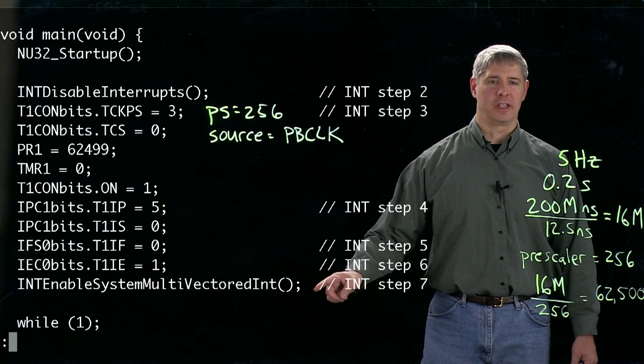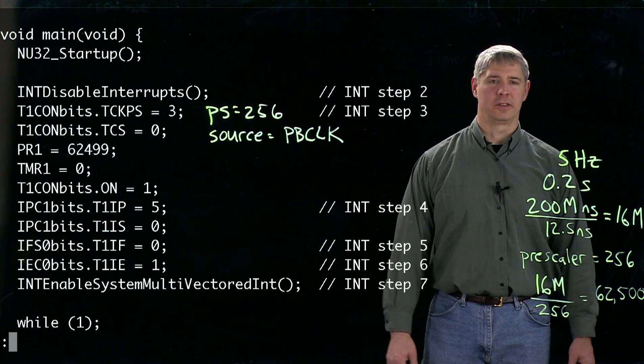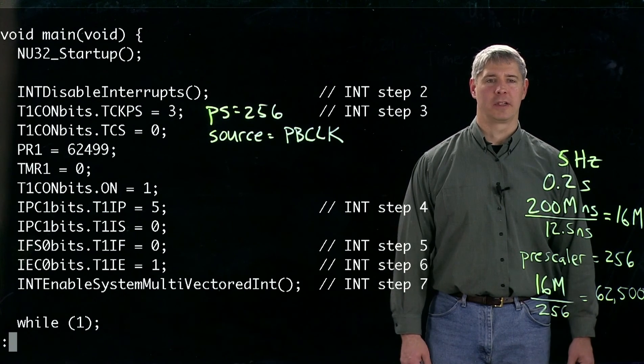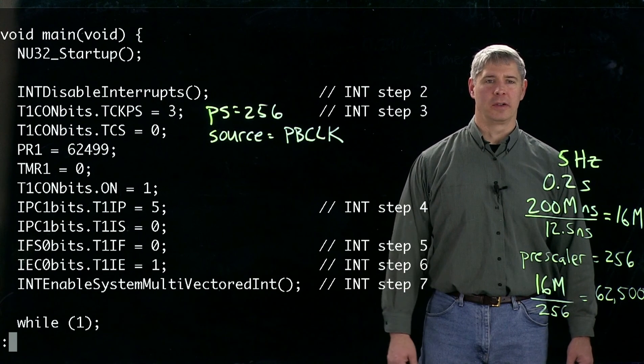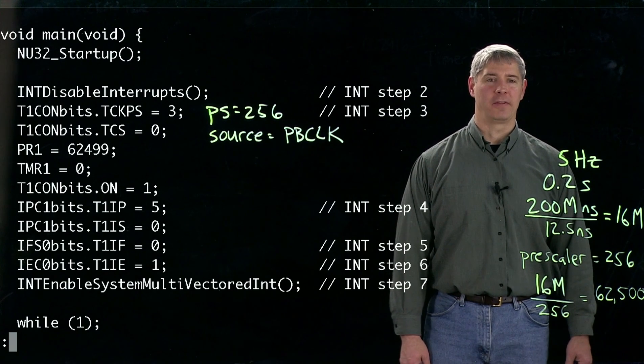interrupt flag so we haven't requested an interrupt yet. Then we're going to enable the timer to start creating interrupts. And now we're going to turn the CPU back on to start processing interrupts. So all this program does is sets up timer one so it's going to create an interrupt five times a second.